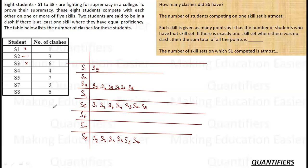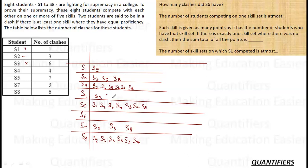S7 has three clashes. Checking who is available: S7 must have clashed with S3, S5, and S8. Similarly, S2 also has three clashes and must have clashed with S3, S5, and S8. For S4, which has four clashes, three of them are definitely S3, S5, and S8, as S4 appears in all three of those lists.